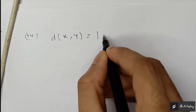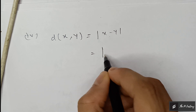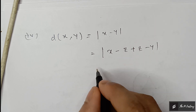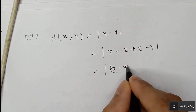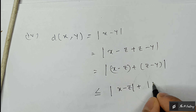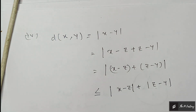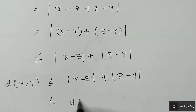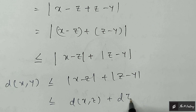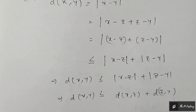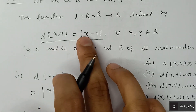For the triangular inequality: d(x, y) = |x − y|. We can write |x − y| = |(x − z) + (z − y)|, and by the triangle inequality for absolute values, this is less than or equal to |x − z| + |z − y| = d(x, z) + d(z, y). Hence the triangular inequality is satisfied.